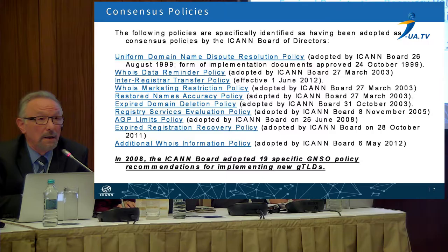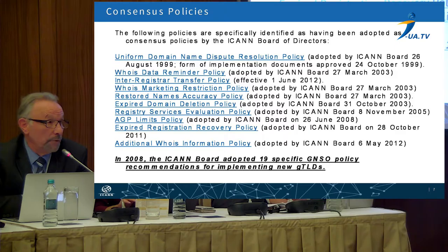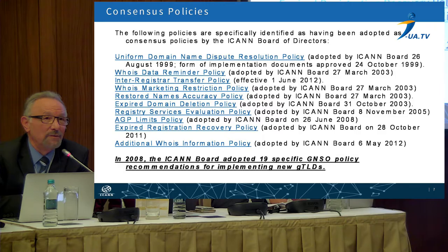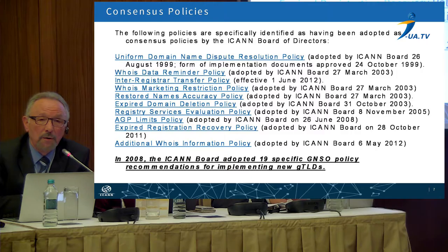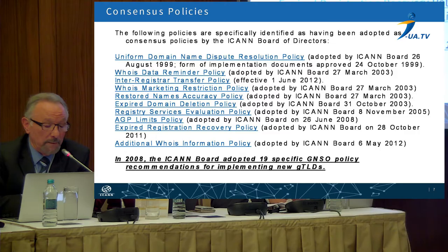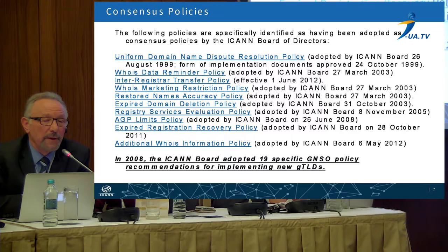Some of the consensus policies deal with the nuts and bolts — the details of registering domain names. In particular, one of the first policies approved in 1999 was the Uniform Domain Name Dispute Resolution Policy. Since on this panel we're looking at how to resolve domain name disputes, this was an early effort in 1999 as a consensus policy embedded in the contracts of the registrars and registries. It was an attempt to resolve such disputes without going through the court systems, because that's a long, expensive process and we're not always sure the end result is the best solution for everyone. The aim was mediation or resolution short of legal action.